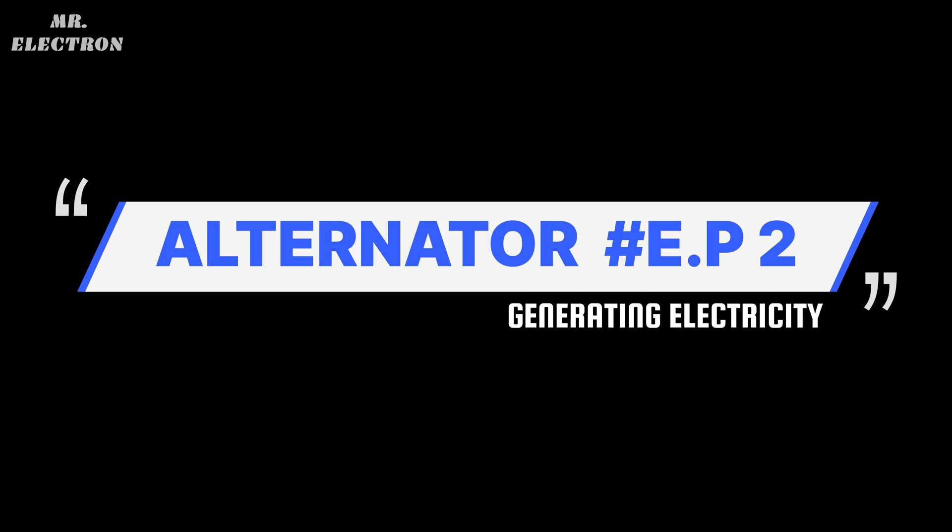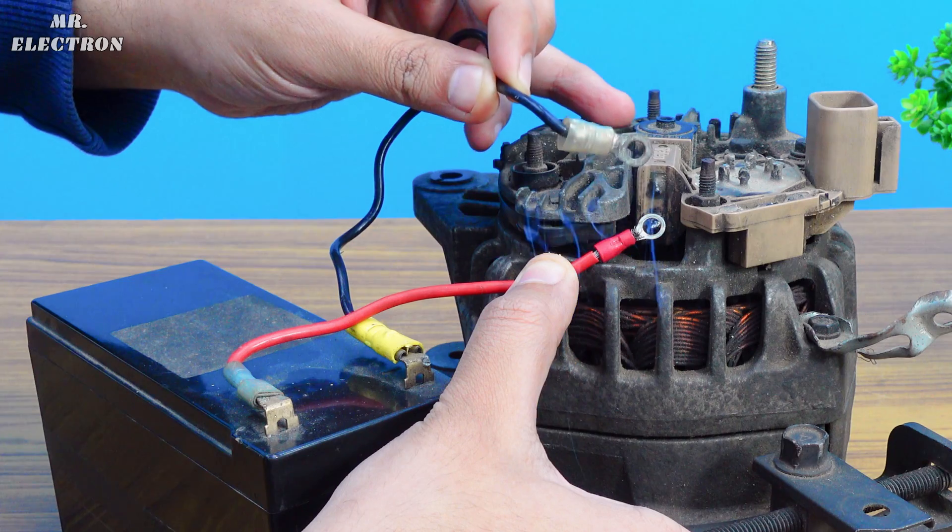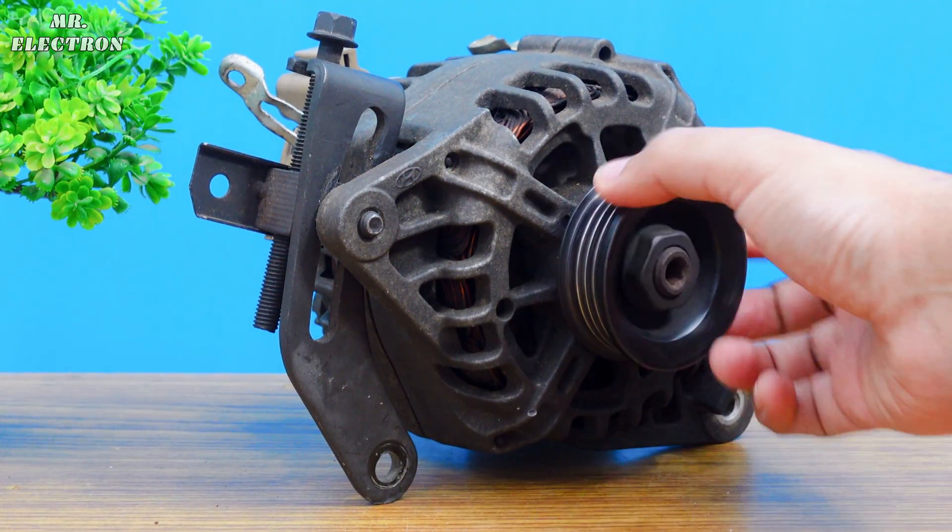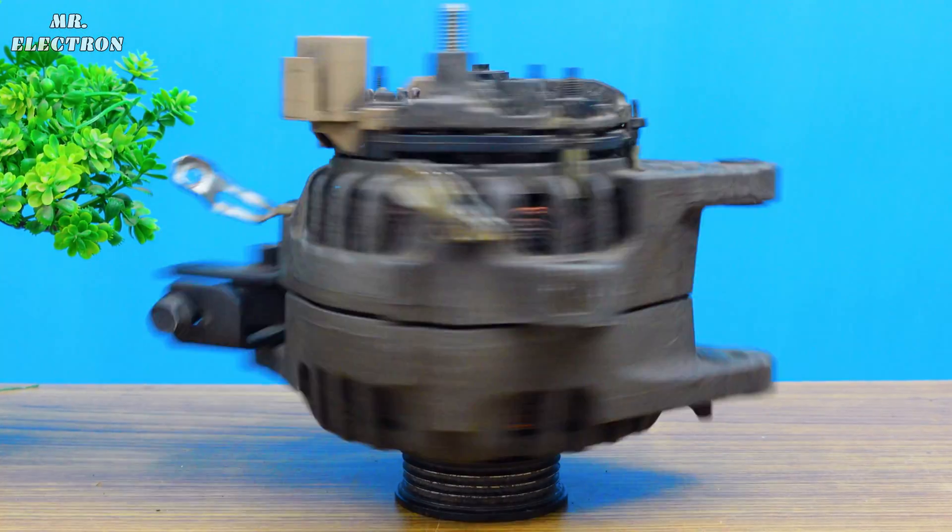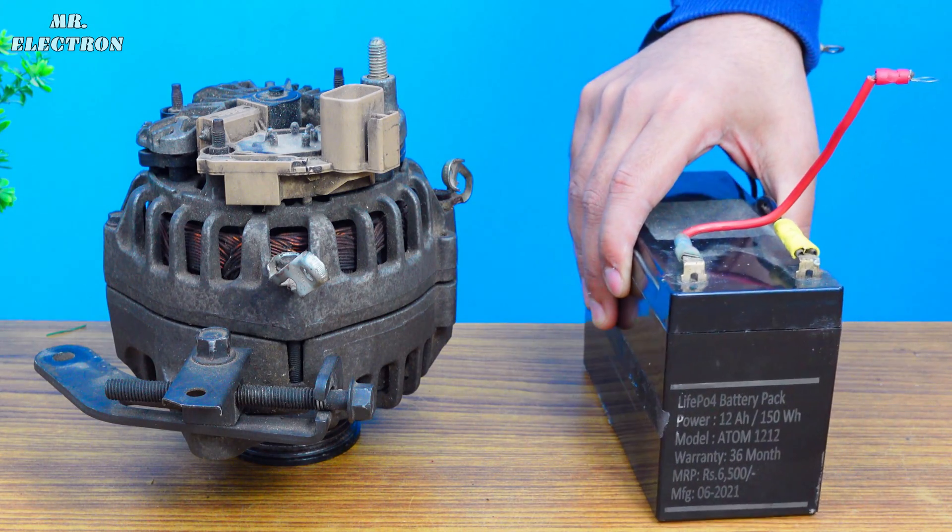In this episode 2, I will be generating 12 volts from a car alternator through battery excitation. This is a Valeo manufactured 12 volts 90 amps car alternator, and for battery excitation we will need a 12 volts battery of any size.